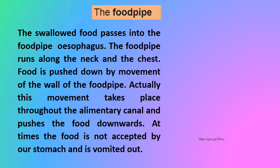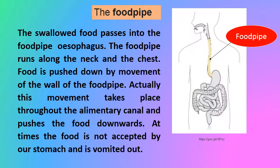The swallowed food passes into the food pipe, also known as the esophagus. The food pipe runs along the neck and the chest. Food is pushed down by movement of the walls of the food pipe. This movement takes place throughout the alimentary canal and pushes the food downwards to the stomach. If food is not accepted by our stomach, it is vomited out.